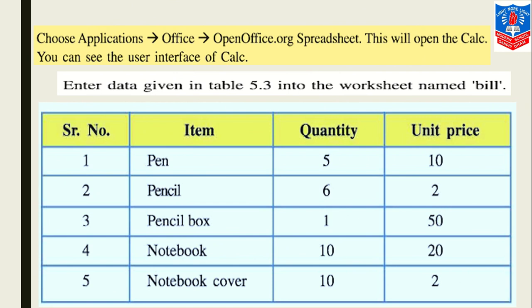We will go to the same as we are using OpenOffice. So choose Applications, similar to the start window as I said earlier. We will go to Applications, in Applications we will go to the Office option. In Office option, we will go to OpenOffice.org Spreadsheet, or directly we can go to Calc. This will open Calc for the user interface. Now we have to enter the data.